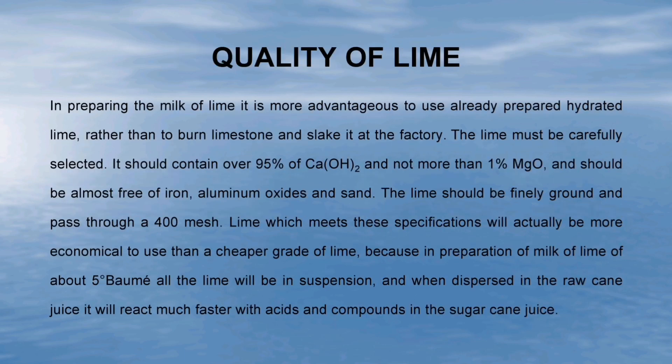Before adding lime for juice clarification, one must analyse the quality of lime. If it is of required strength, then it can be used, otherwise it is rejected. In preparing the milk of lime, it is more advantageous to use already prepared hydrated lime, rather than to burn limestone and slake it at the factory. The lime must be carefully selected. It should contain over 95% calcium hydroxide and not more than 1% magnesium oxide, and should be almost free of iron, aluminum oxides and sand. The lime should be finely ground and pass through a 400 mesh. Lime meeting these specifications will be more economical to use than a cheaper grade, because in preparation of milk of lime of about 5 degrees Baumé, all the lime will be in suspension and will react much faster with acids and compounds in the sugarcane juice.